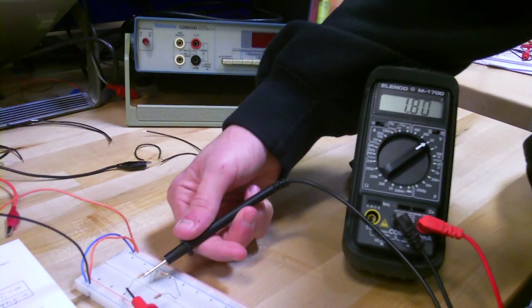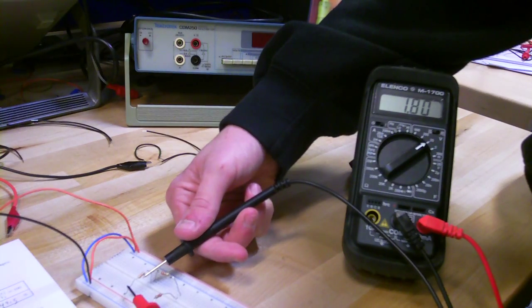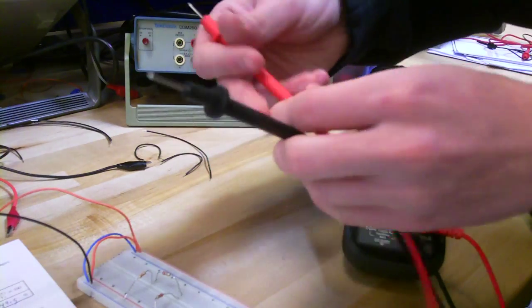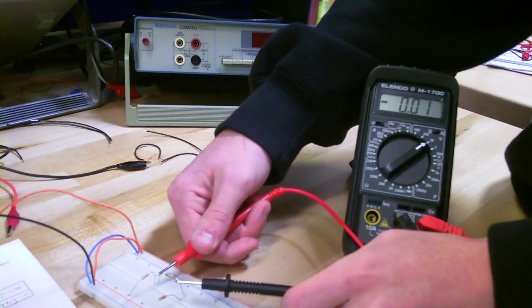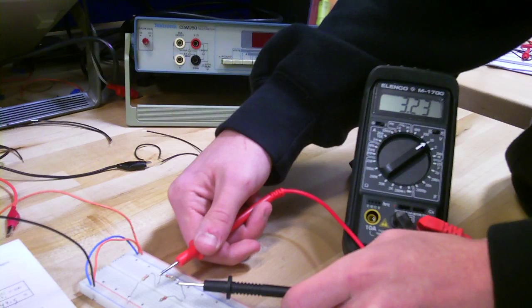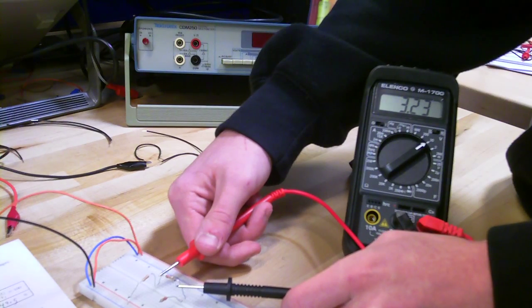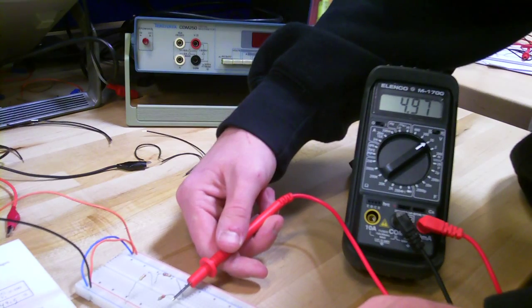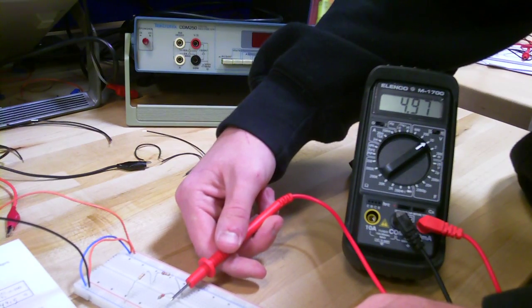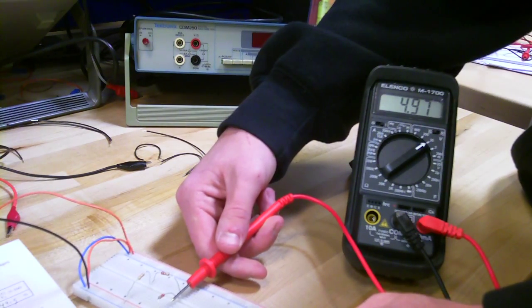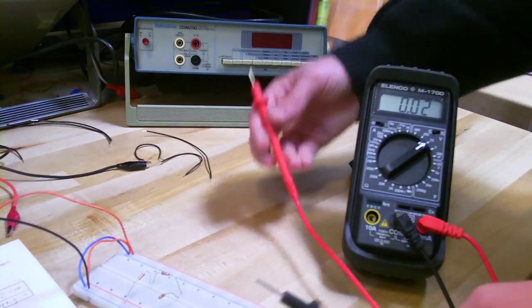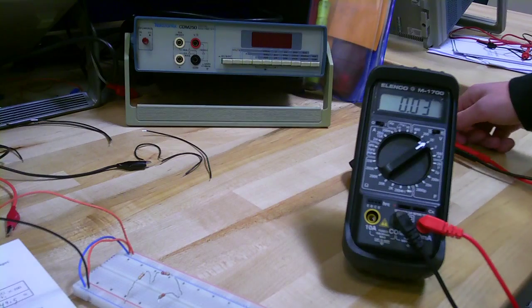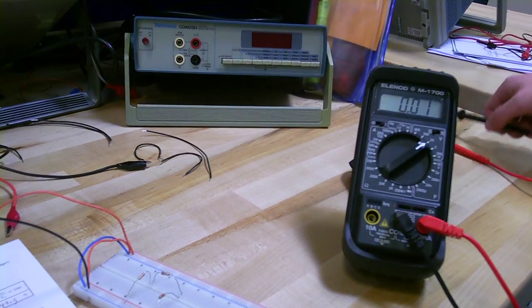So we see a voltage of 1.2 volts across R1, and we see a voltage of 3.23 volts across R2. And we see a voltage of 4.97 volts across the third resistor. We compare those to the calculated values we've done before, and we see that they are within our standard error.